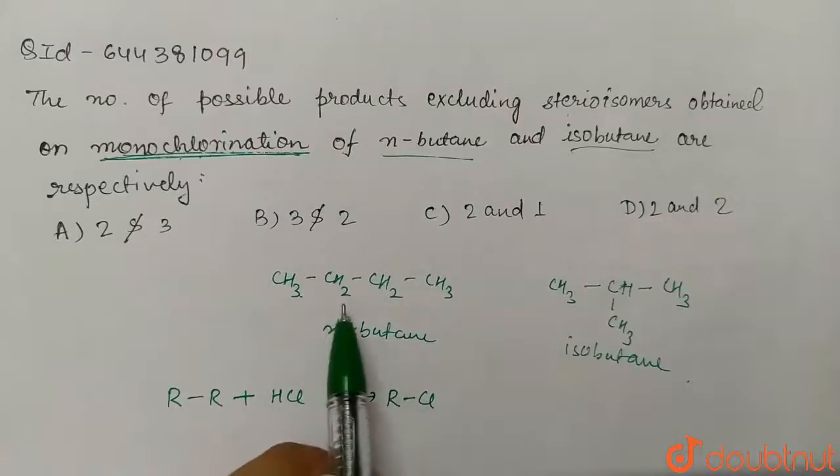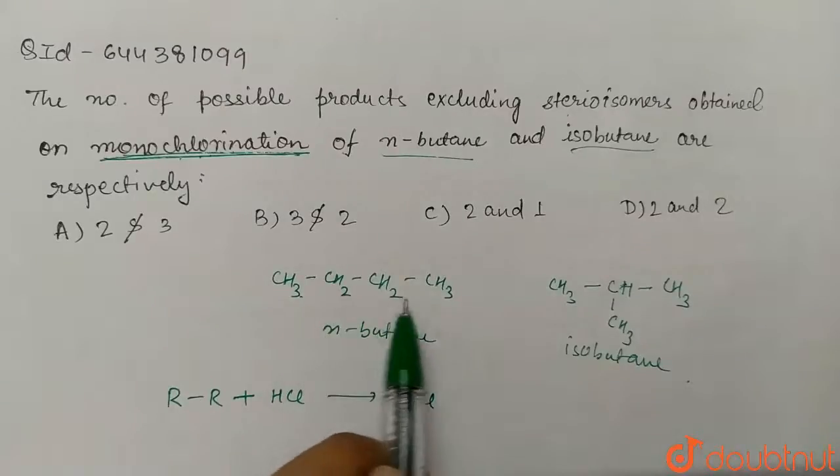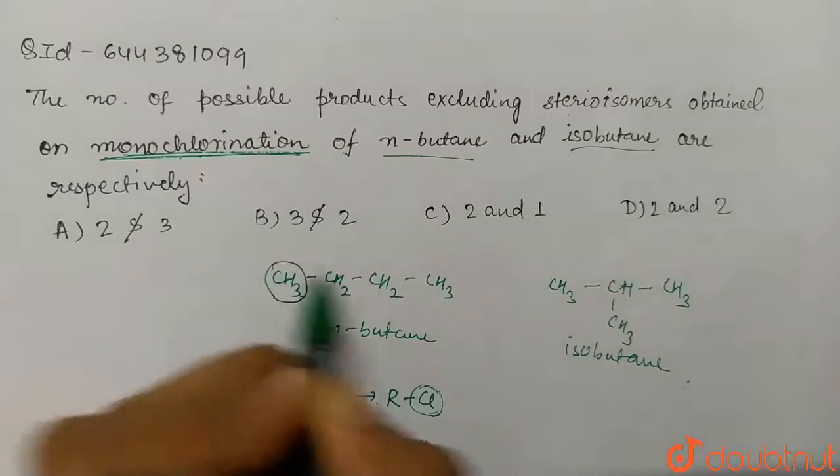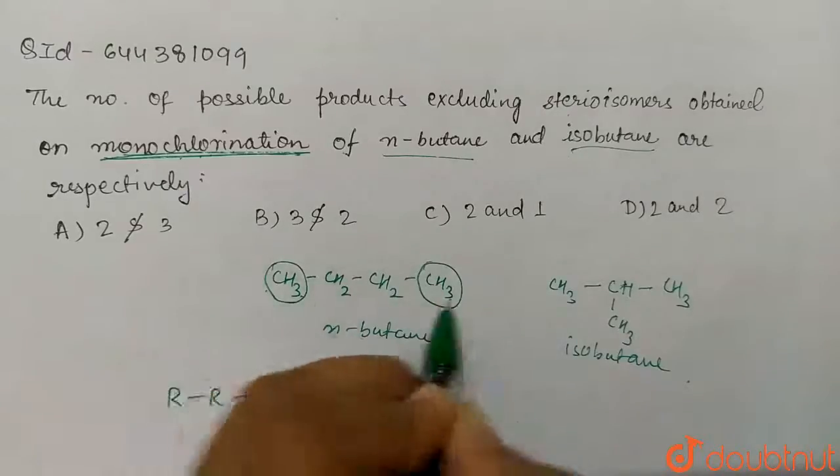We have to find how many different types of hydrogens are present so that we can replace them with chlorine. In N-butane, these two carbons have one type of hydrogen.